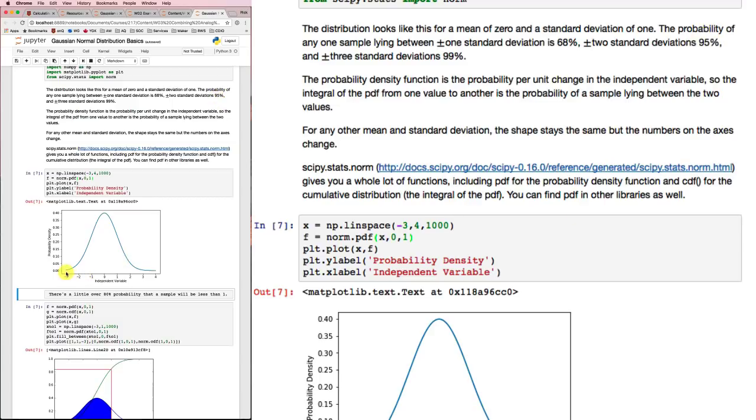And 3 standard deviations, out to here and out to here, that covers 99% of the probability. So those are some important numbers to at least keep in mind. About two-thirds, 95%, and 99%.